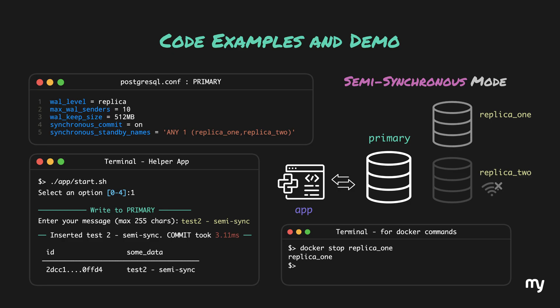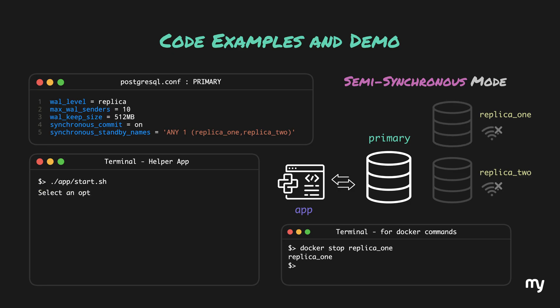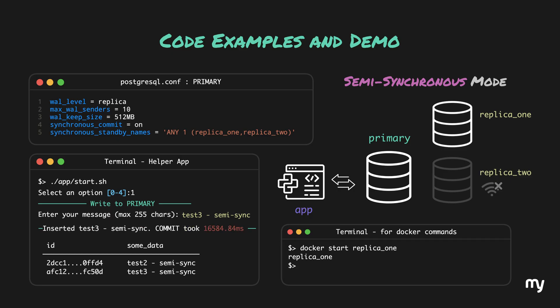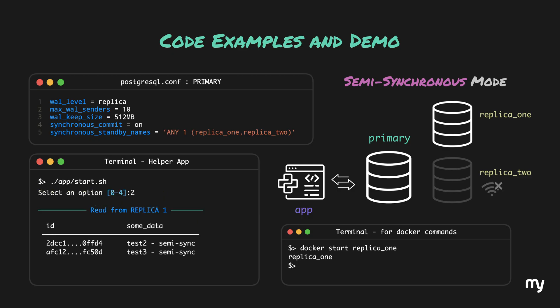Now let's stop replica1 as well and try to write something to the database once again. We can type in test3-semi-sync and press enter. This time the prompt blocks, because the primary has not marked the transaction as completed — none of the replicas have given an acknowledgement. Now if I bring back any one of the replicas, the prompt should unblock. Let's bring back replica1. As you can see, bringing back replica1 unblocked the prompt. And if we query replica1, we can see the latest data.